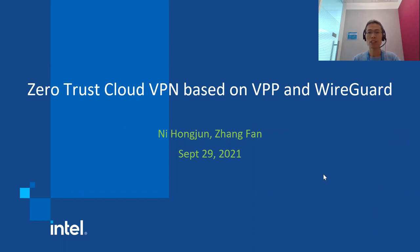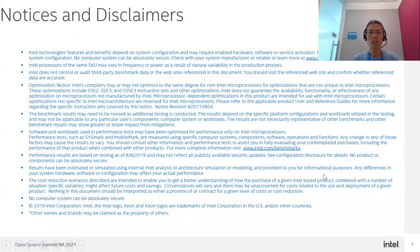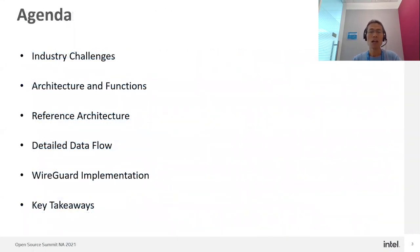This is today's agenda. Firstly, I will introduce industry challenges for networking security, and then we will introduce Zero Trust network access architecture and key functions. Then we will propose our reference architecture for the secure gateway and illustrate the details for each component.